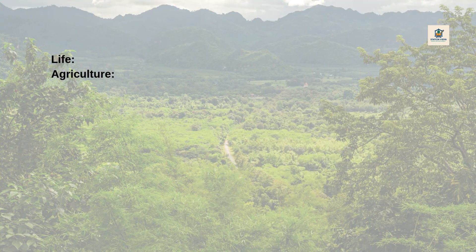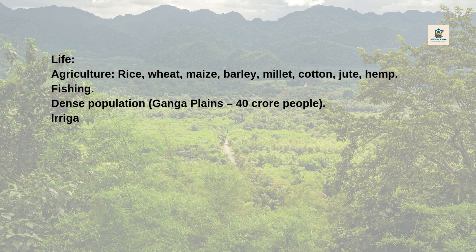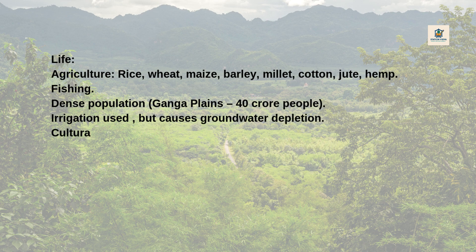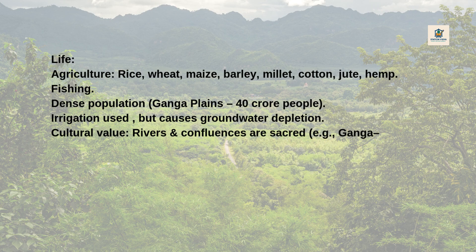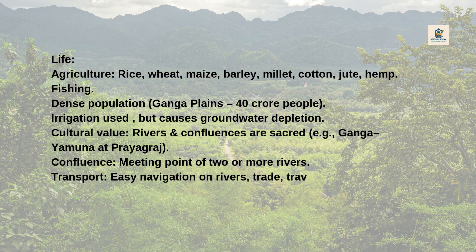Life on plains: Agriculture is the main activity — crops include rice, wheat, maize, barley, millet, cotton, jute, and hemp. Fishing is also common. Plains support dense populations; the Ganga Plains alone support 40 crore people. Irrigation is used, but causes groundwater depletion. Rivers and confluences are culturally sacred — e.g., the Ganga-Yamuna confluence at Prayagraj. Confluence means the meeting point of two or more rivers. Transport is easy via river navigation, trade, and travel.